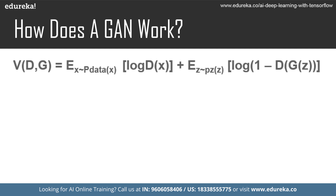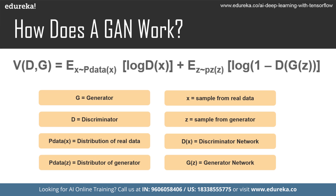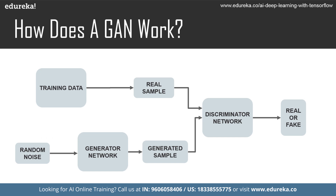The whole process can be formalized mathematically: G is the generator, D is the discriminator, P_data(X) is the distribution of real data, P_data(Z) is the distribution of the generator, X is a sample from real data, and Z is a sample from the generator, where D(X) is the discriminator network and G(Z) is the generator network. In the flowchart: training data provides the real sample; the generator produces a sample from random noise; the discriminator then checks whether the incoming sample is real or fake.